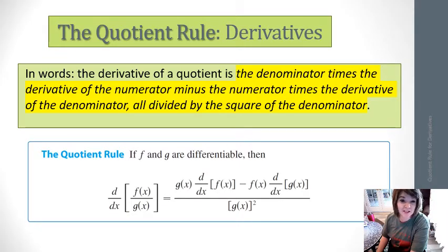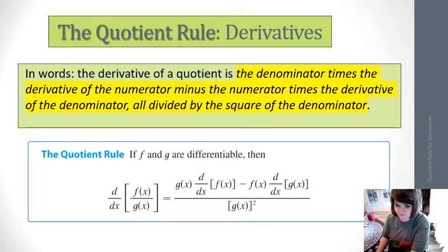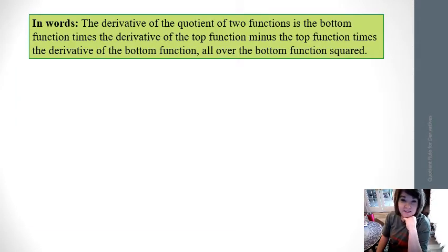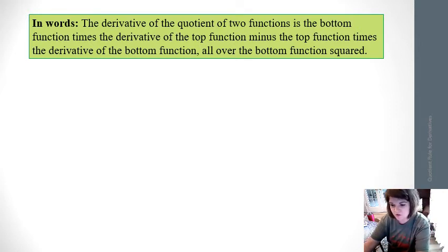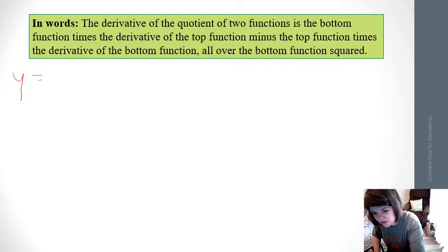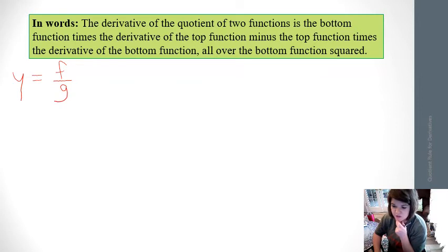I'm not really in love with this slide — this is the book's definition and it looks very confusing. I'm going to go on to the next slide. Look this over, and I'll show you how to do it. In words, the derivative of the quotient of two functions is the bottom function times the derivative of the top, minus the top function times the derivative of the bottom function, all over the bottom squared. So say you have y equals a function f over g — if you want to find the derivative, here is what it is.